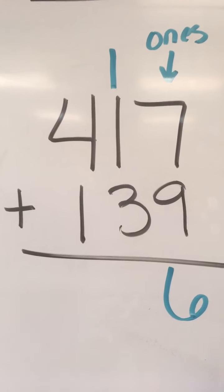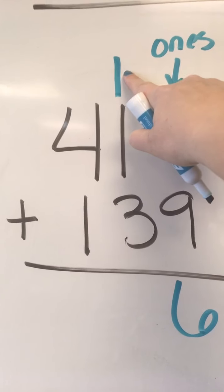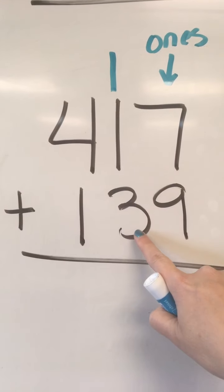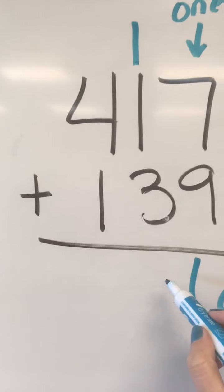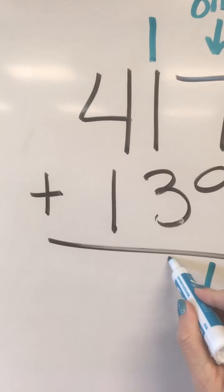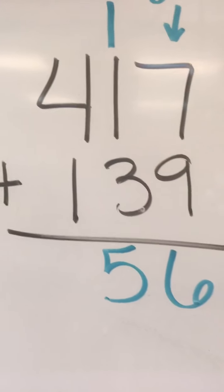Then we're going to add our tens place, and we have ten plus ten plus thirty. One plus one plus three, and that gives us fifty, because we're in the tens place. That's five tens.